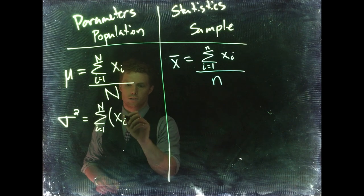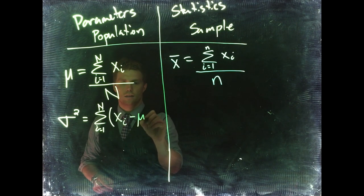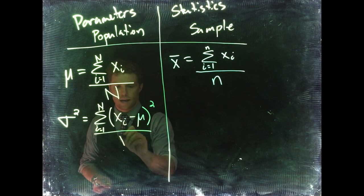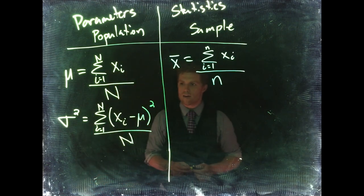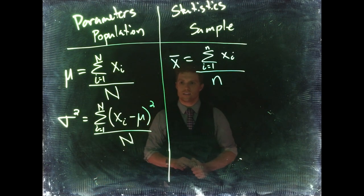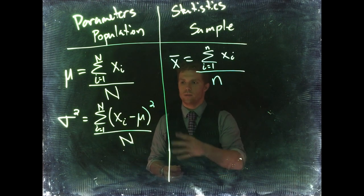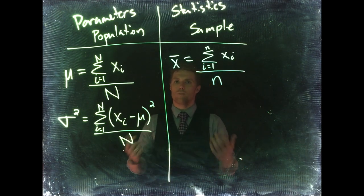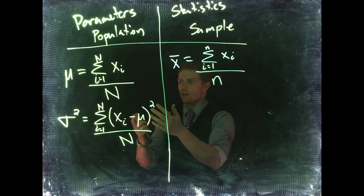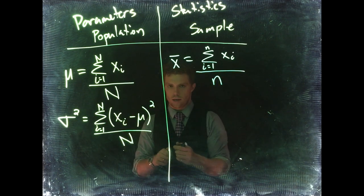x sub i - that's your individual measurement - minus the mean (μ) squared, divided by N. This is the average squared distance from the mean, or the average distance squared from the mean. We're trying to figure out how far away our measurements are on average from the mean. Our variance helps us do that.